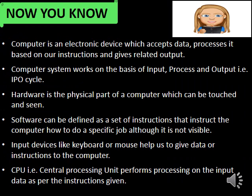Now let's recall some important points from this chapter. First, a computer is an electronic device which accepts data, processes it based on our instructions and gives related outputs. Second, a computer system works on the basis of input, process and output, i.e. the IPO cycle. Third, hardware is the physical part of a computer which can be touched and seen. Fourth, software can be defined as a set of instructions that instruct the computer how to do a specific job, although it is not visible.